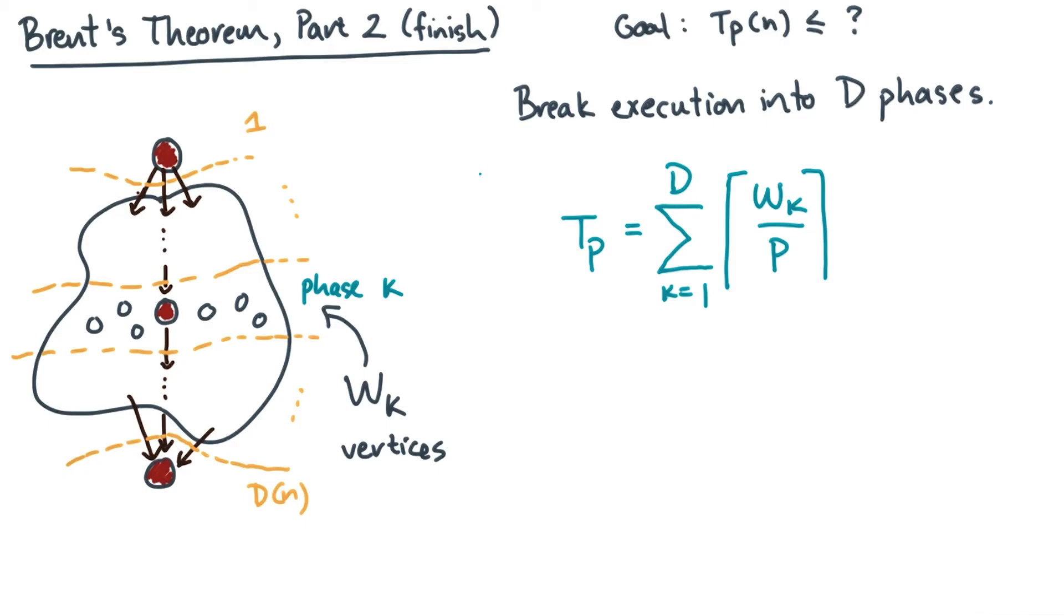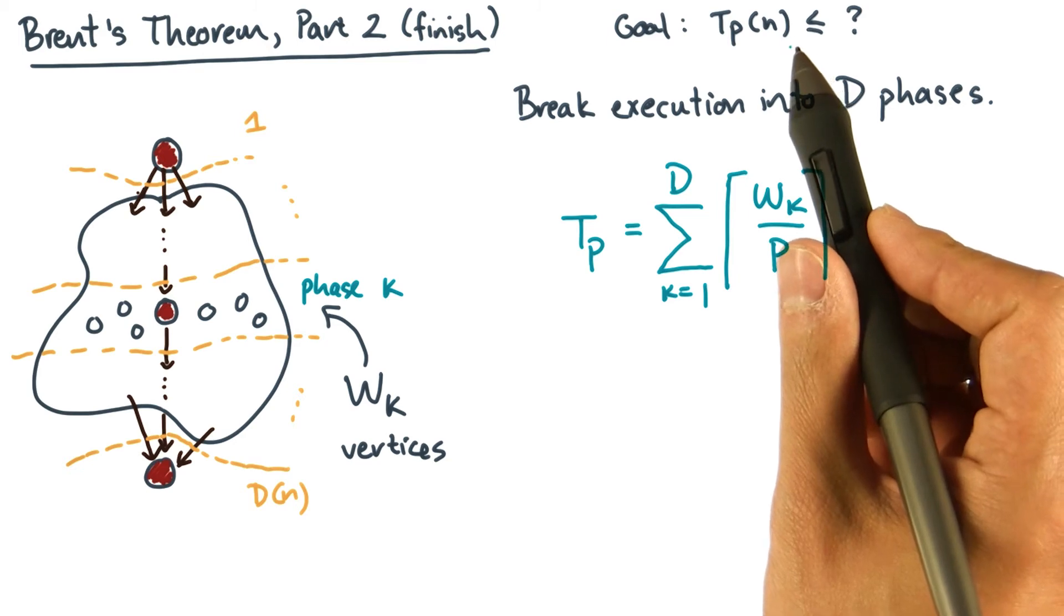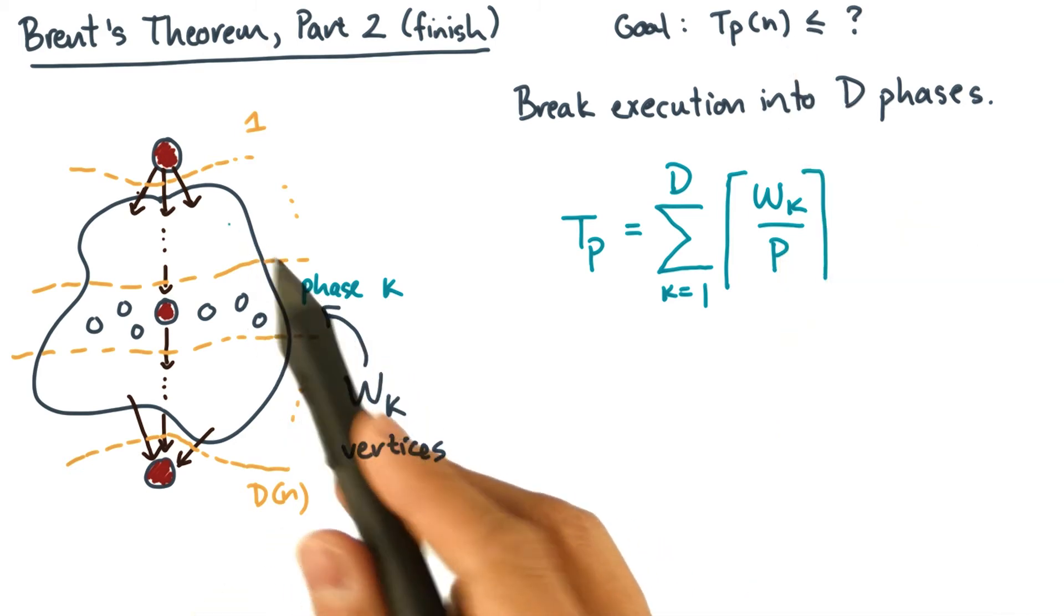Back to our regularly scheduled program. Let's see where you are. You want an upper bound on time. You took the DAG and you broke it up into a bunch of phases.